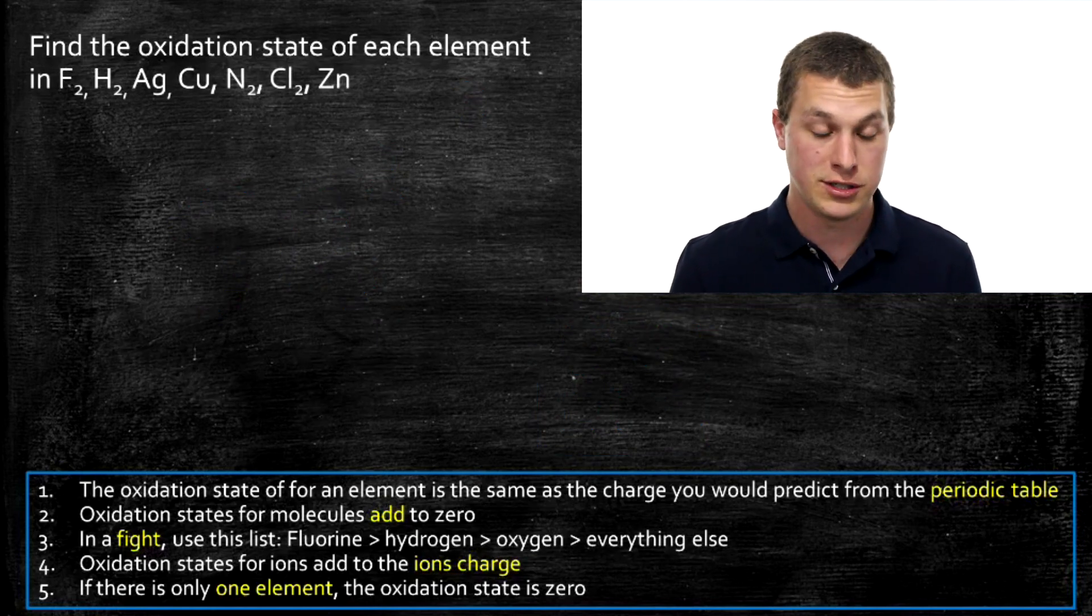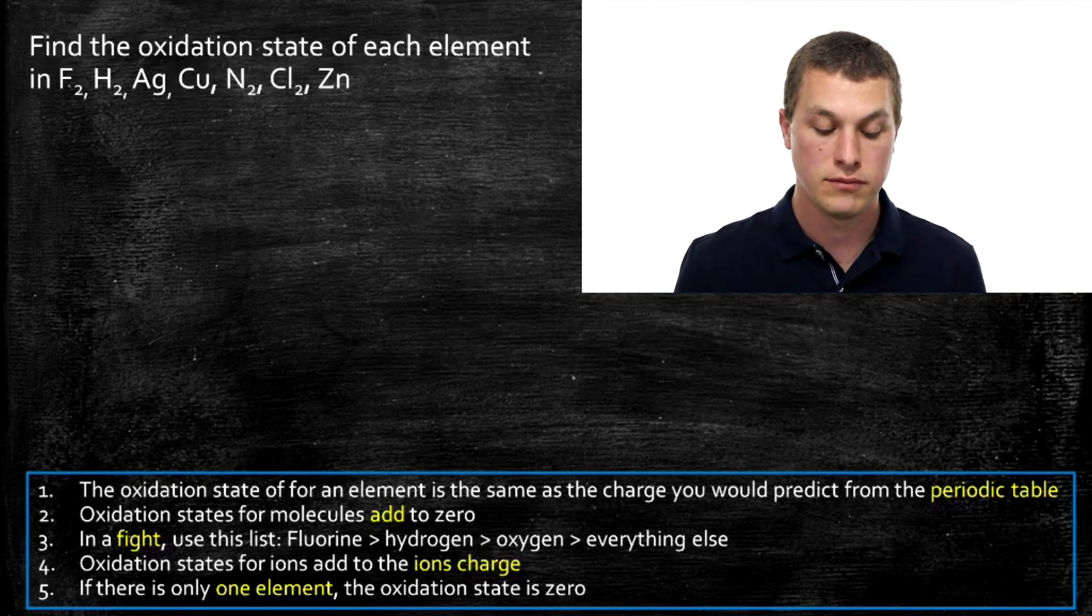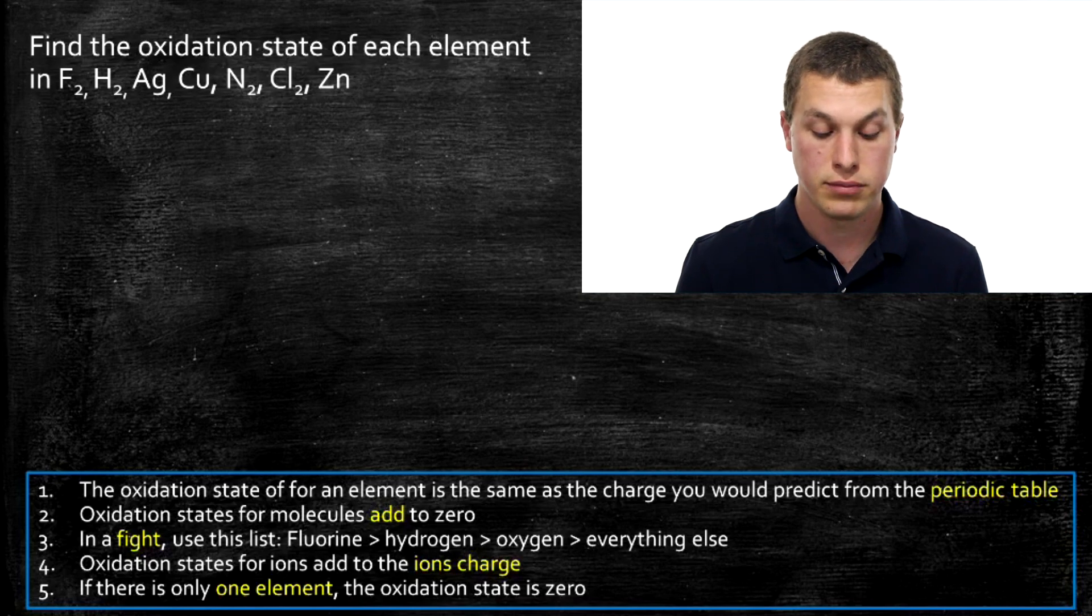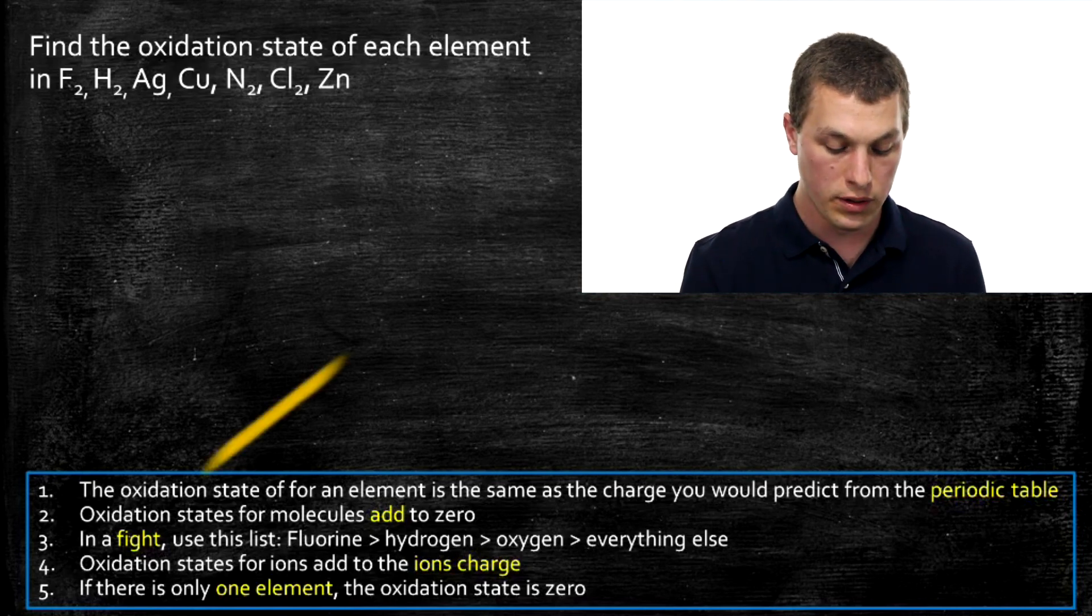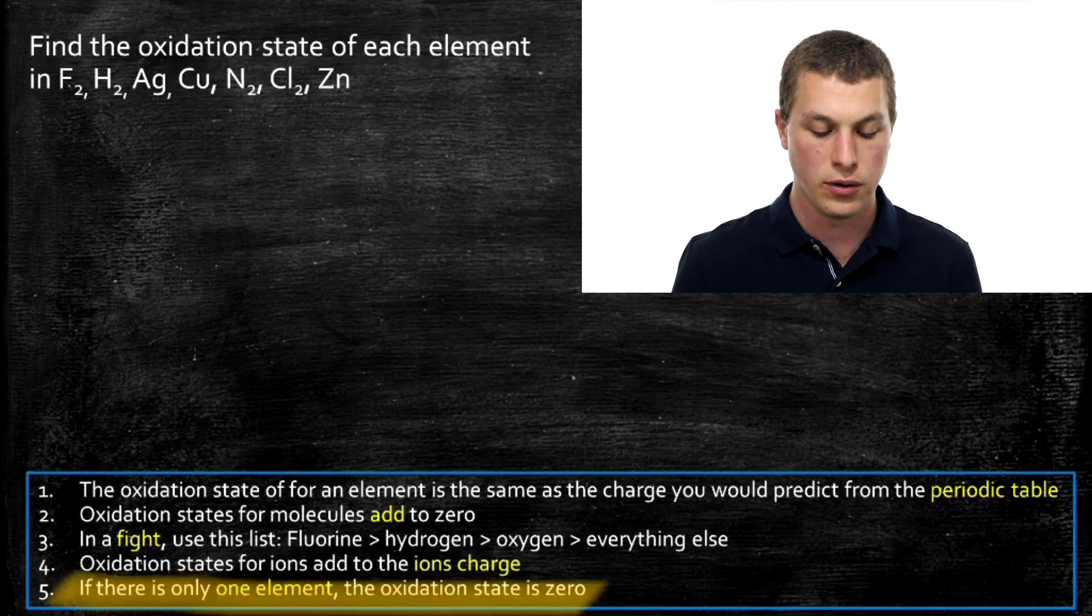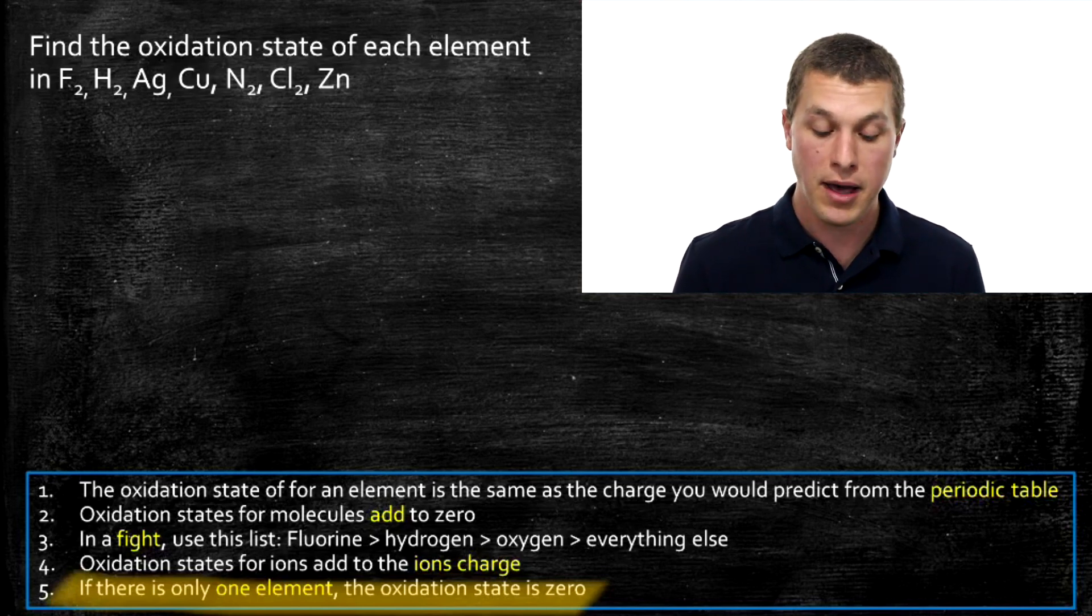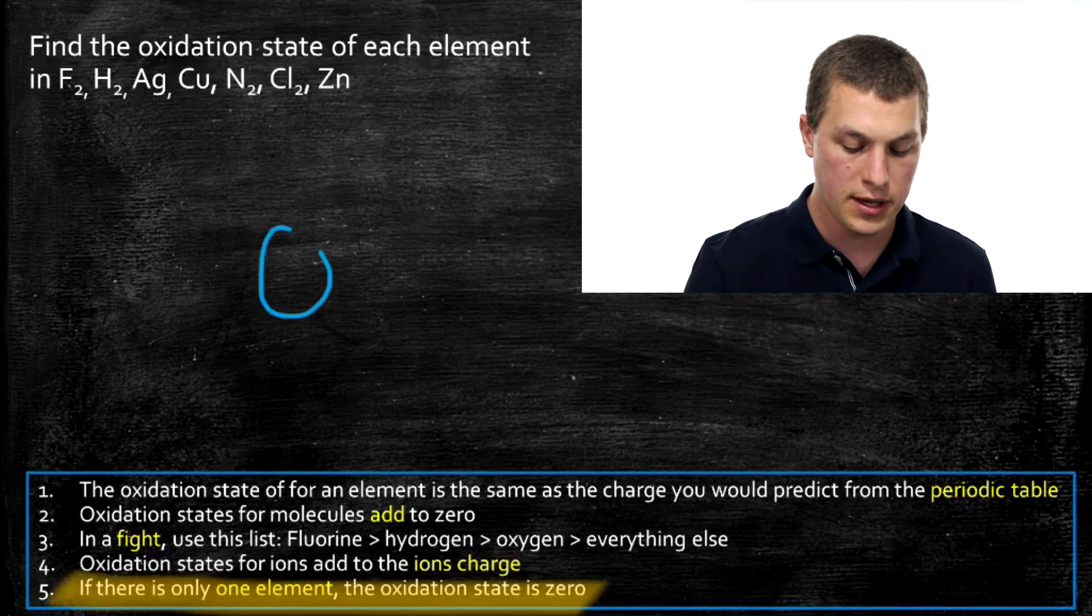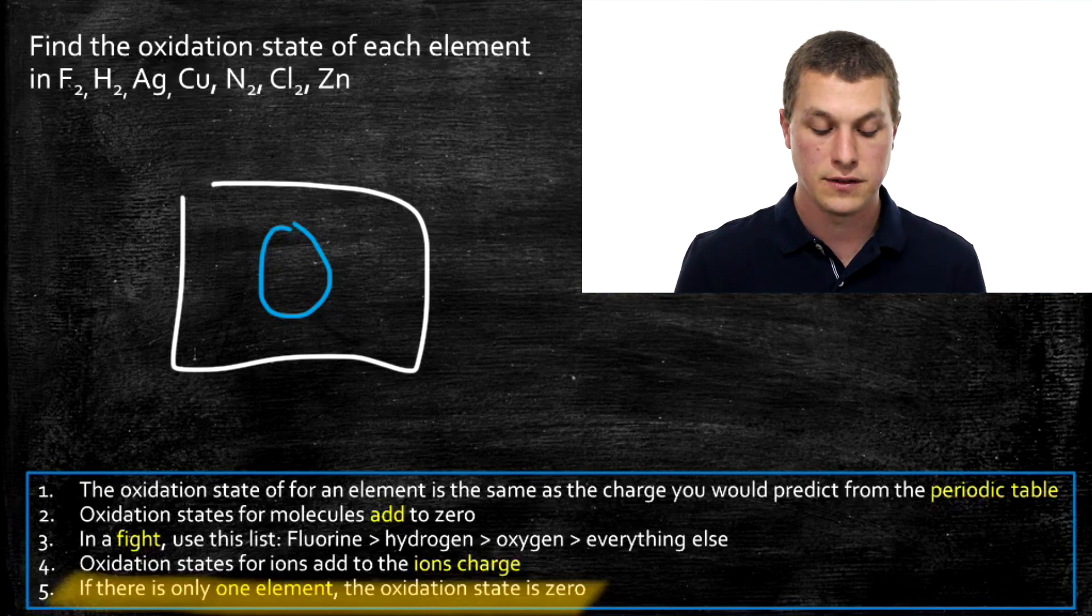One last problem, which includes a ton of different examples. What's the oxidation state in each element for fluorine, F2, H2, silver, copper, nitrogen 2, Cl2, or zinc? The answer for all of them is the same. The oxidation state for every single one of those is zero. The reason is because rule five says if there's only one element in our compound, the oxidation state is zero. Here we have seven different compounds, but all of them only contain one element type. So if you have a compound that's just all made up of the same element, the oxidation state is zero.